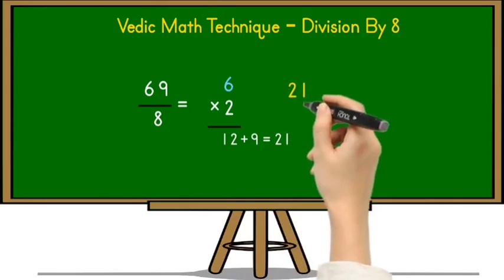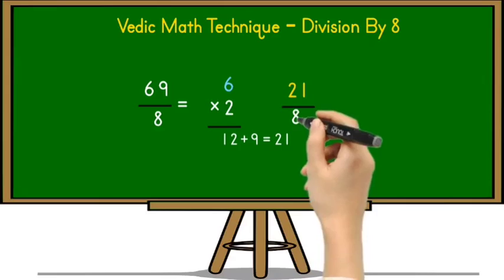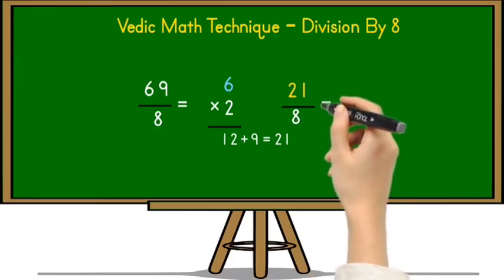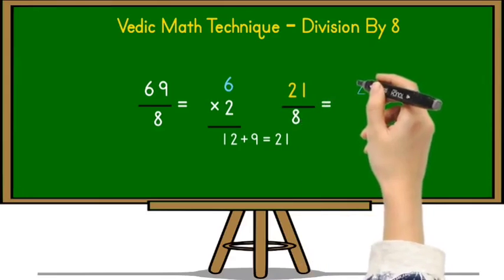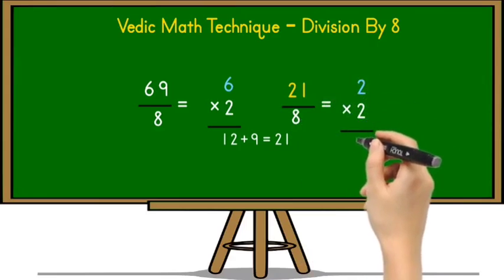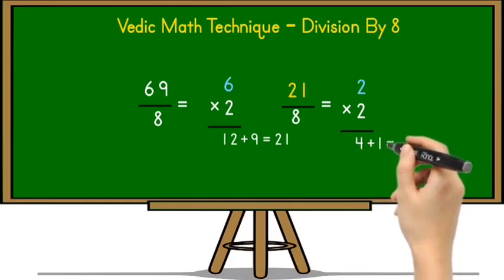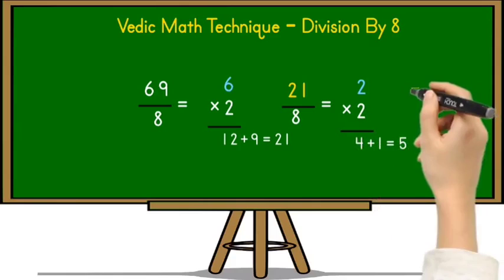Now in the next step, we take this 21 and divide it by 8. 21 is greater than 8, so we can divide it. Again, we use the same strategy. Write down the tens place digit of 21, which is 2, and multiply it with 2. So 2 multiplied by 2 equals 4, and now add the unit place digit of 21 with this 4. So 4 plus 1 equals 5.